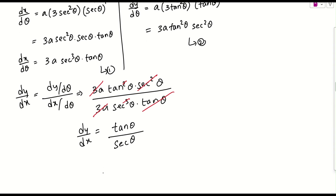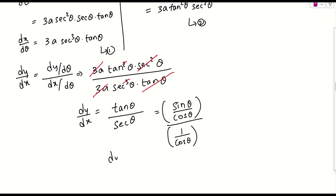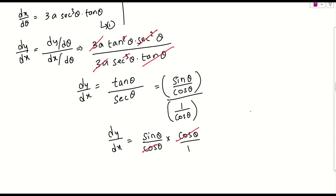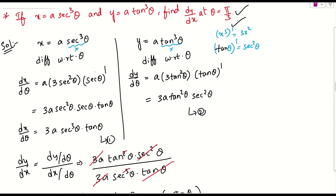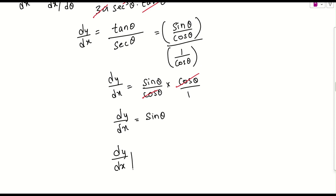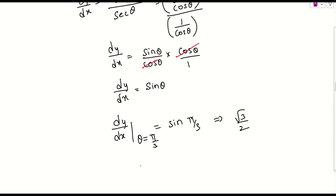Simplifying further: tan is sin theta by cos theta, and secant is 1 by cos theta. So dy by dx equals sin theta by cos theta multiplied by cos theta — the cos terms cancel, giving dy by dx equals sin theta. The question asks for dy by dx at theta equals pi by 3, which is 60 degrees. So this is sin(pi by 3), which we know is root 3 by 2. Finally, dy by dx equals root 3 by 2. This is what they are asking us to prove.